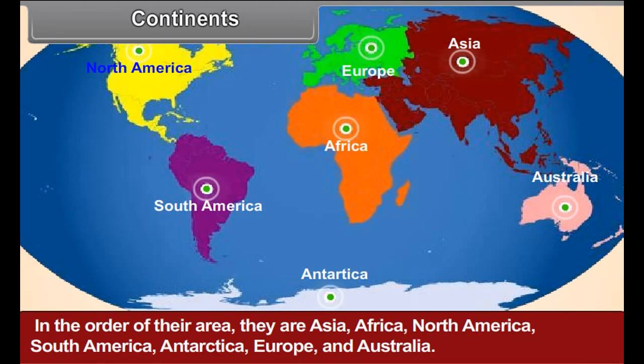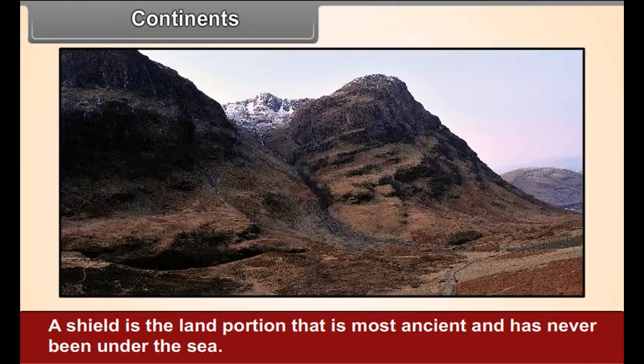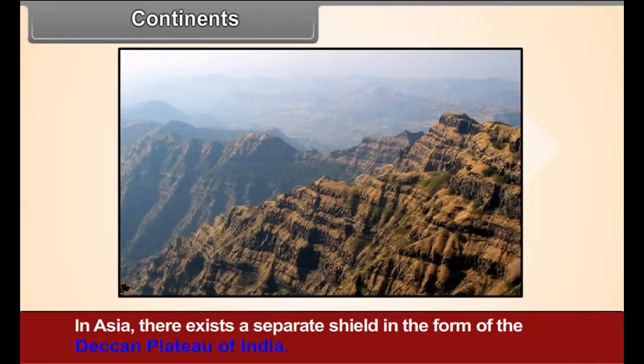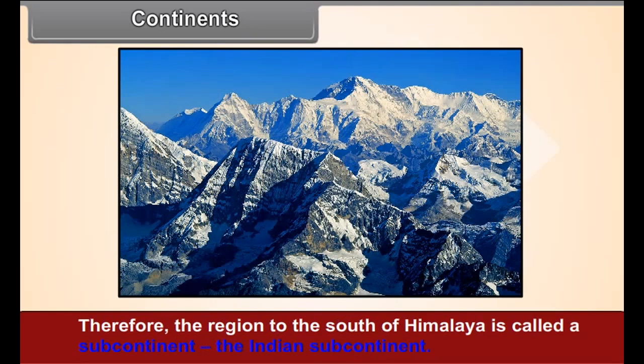In the interior parts of the continents, there exists a shield. A shield is the land portion that is most ancient and has never been under the sea. In Asia, there exists a separate shield in the form of the Deccan Plateau of India. Therefore, the region to the south of Himalaya is called a subcontinent, the Indian subcontinent.